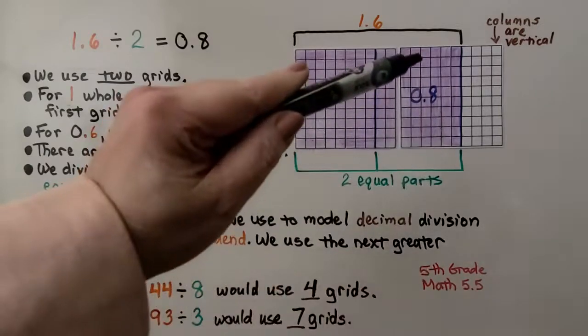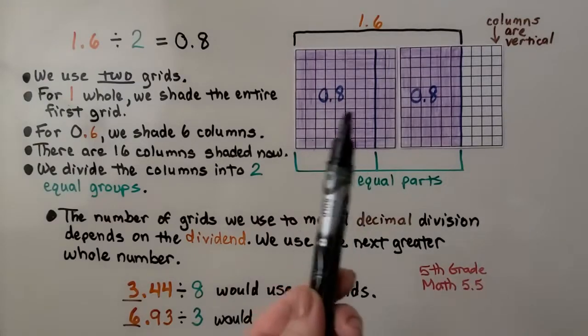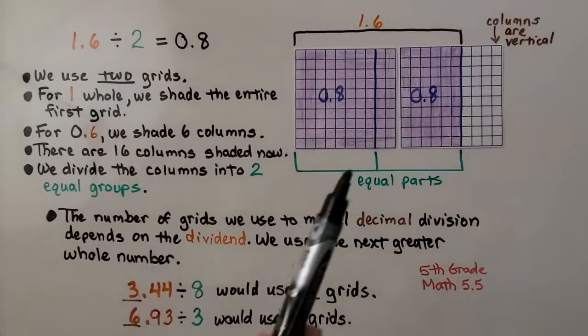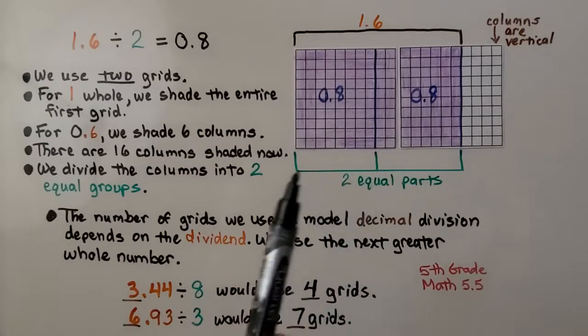Remember, columns come down, rows go across. So we've got 16 columns shaded. There are 16 of those. We want to divide them equally by 2. There's going to be 8 columns in each of the two equal parts. It's going to be 8 tenths.